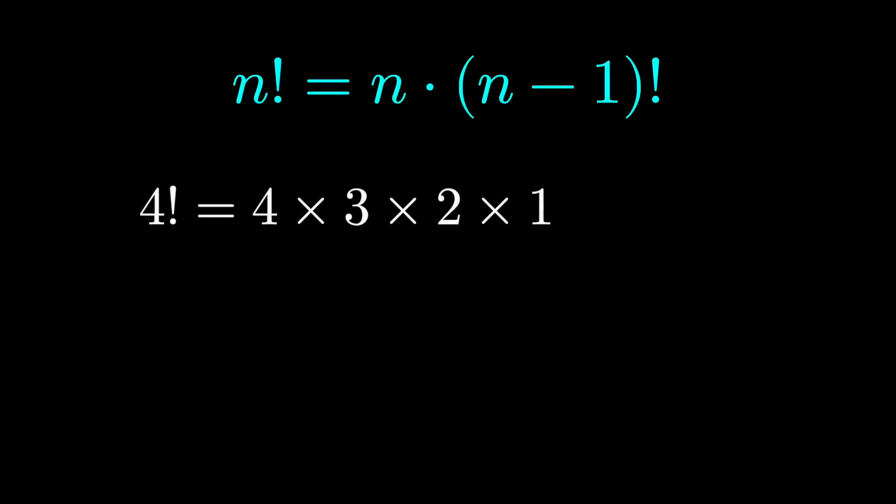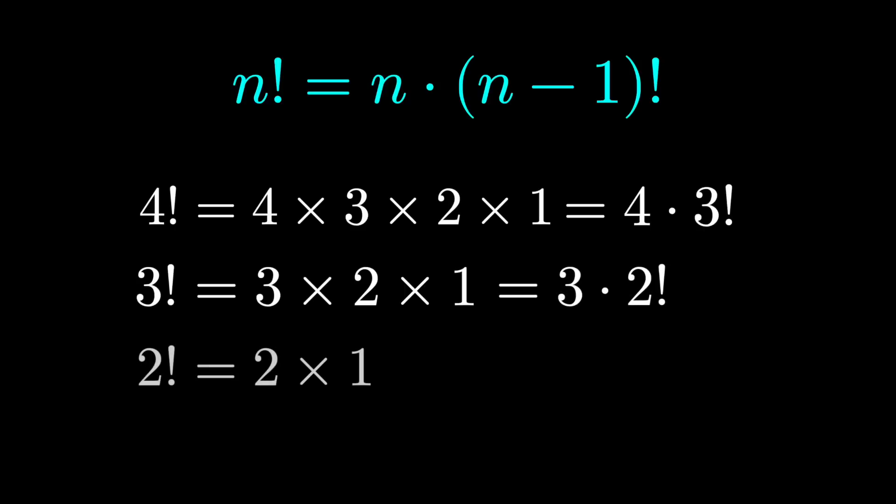So 4 factorial, which is 4 times 3 times 2 times 1, is the same as 4 times 3 factorial. 3 factorial is 3 times 2 times 1, which is 3 times 2 factorial. 2 factorial is 2 times 1, which is 2 times 1 factorial. And 1 factorial is 1 times 0 factorial. So it has to be that 0 factorial is 1.